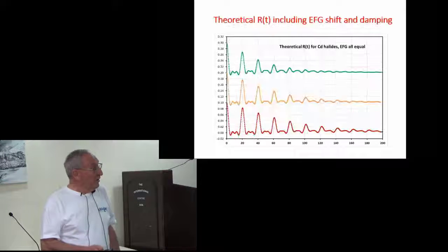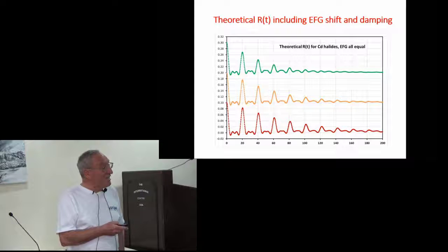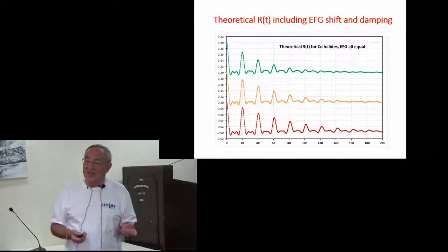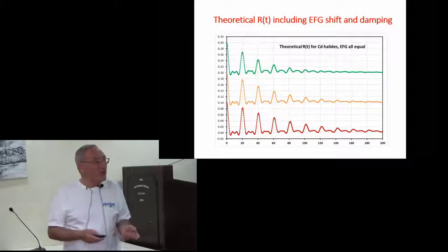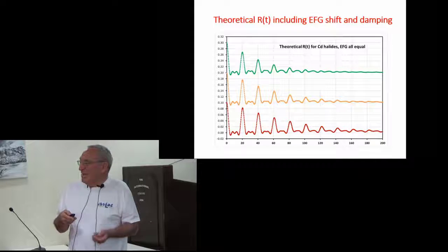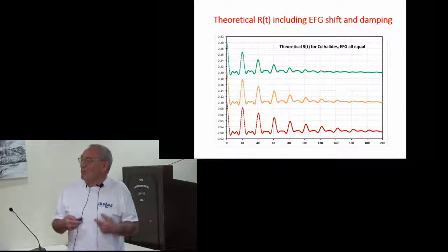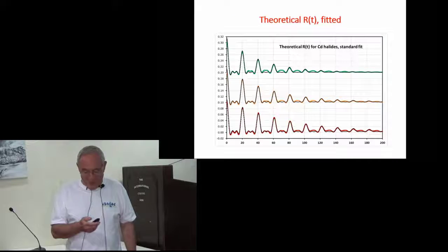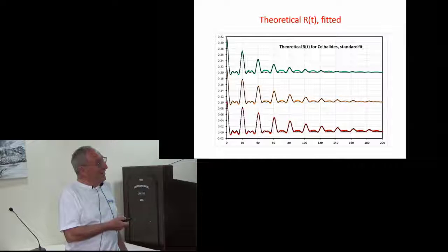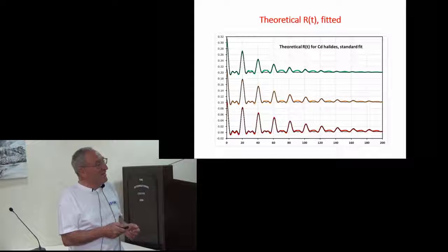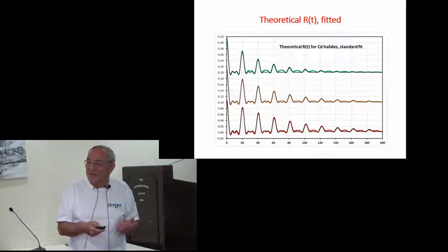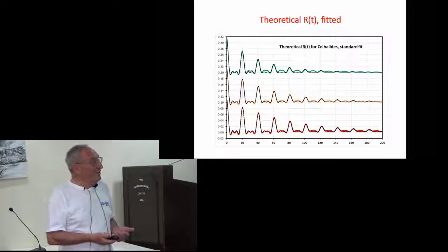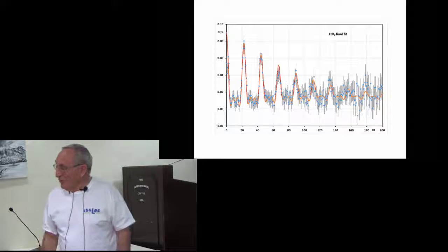And so then we make theoretical calculations what pattern we expect, and we fit the experiment with a standard theory, because these calculations are so complex that we have not been able to include them in a fitting routine yet. But we can make a standard fit. But we can also make a standard fit to the theory. So that's then the standard fit to the theory, and you see the fitting spectra reproduce fully all the periodicity, except for some of the small details which unfortunately our experiments don't show yet.